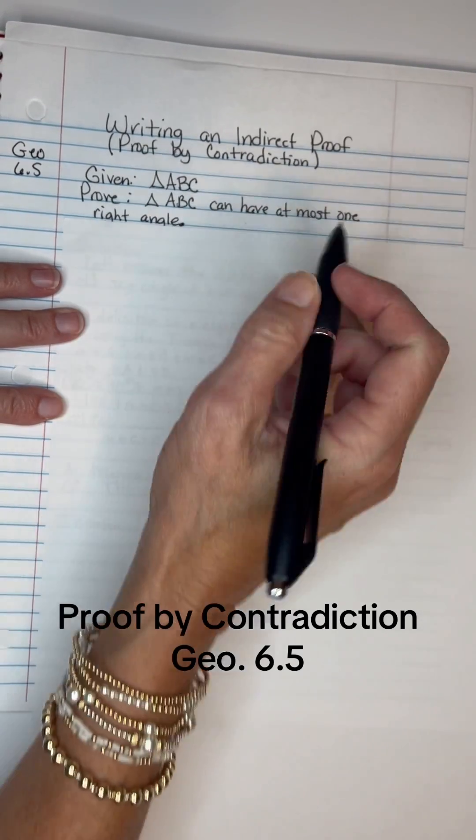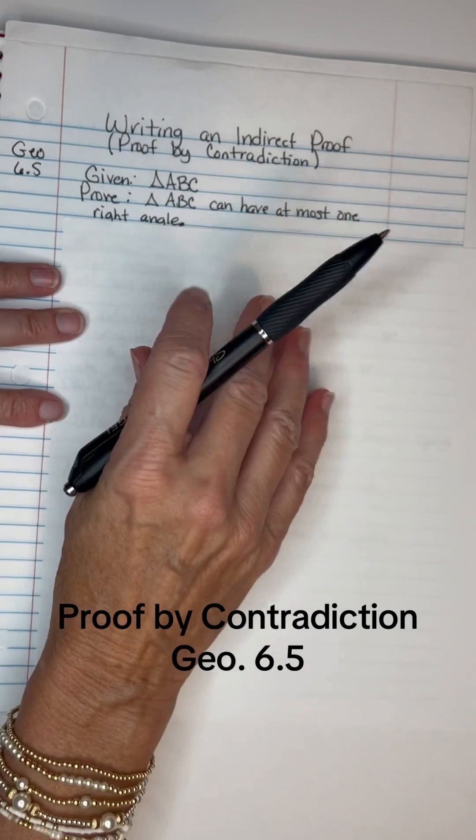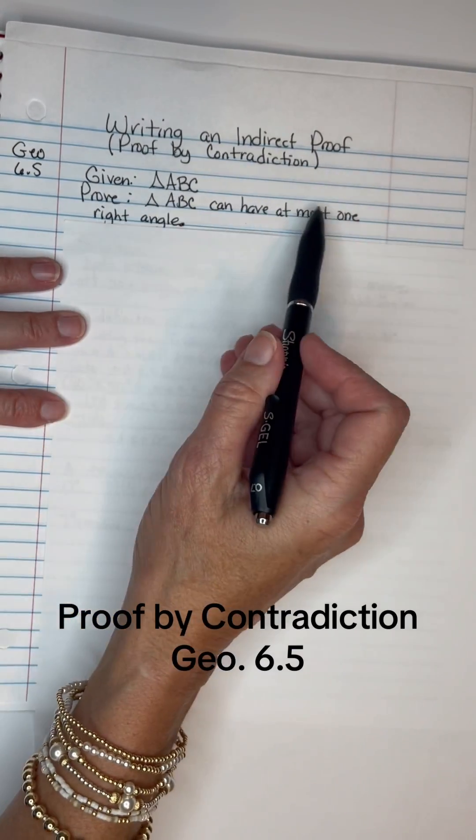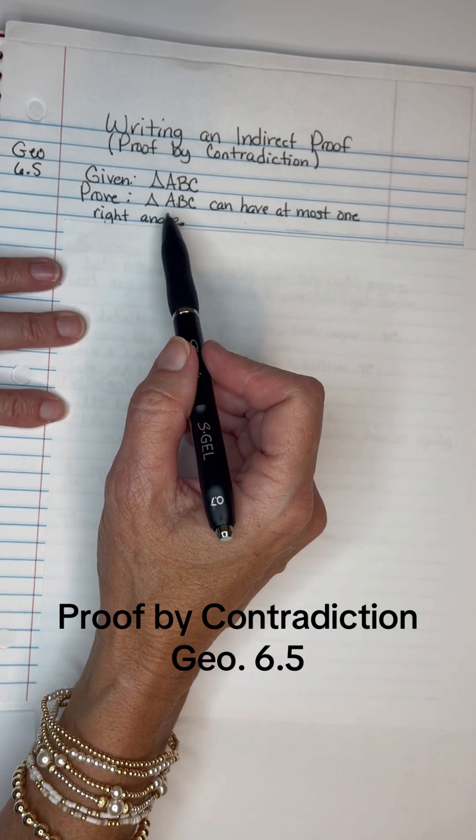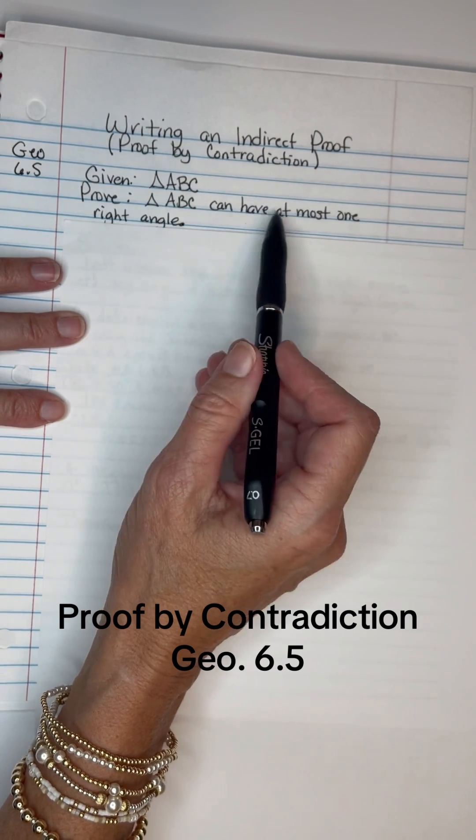Now when you're doing a proof by contradiction, you take the sentence that you're wanting to prove and you negate it. You change it. You make it mean the opposite of what it says.